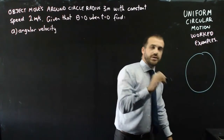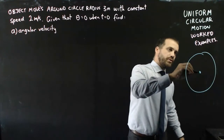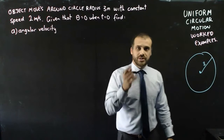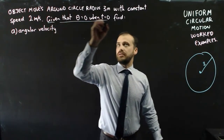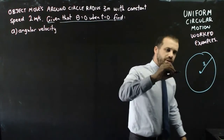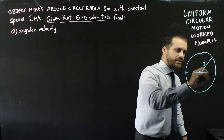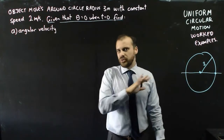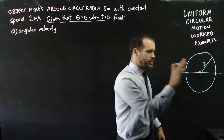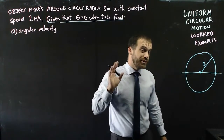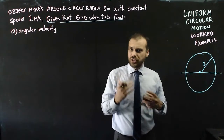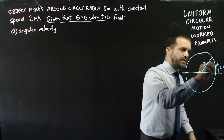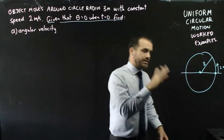What this means is that we have a circle with radius 3. An object is moving at 2 metres per second. The condition theta equals 0 at t equals 0 means it starts here — this makes life really a lot easier because there's no shift. It's moving at 2 metres per second; that's its speed.